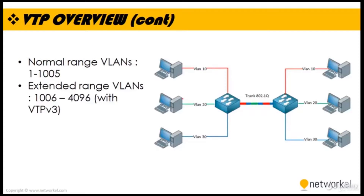In VTP protocol, we have a VTP server which distributes and synchronizes the VLAN information. You can propagate the normal range VLANs with VTP, but if you want to propagate the extended range VLANs, you should use VTP version 3. This extended range should be distributed using VTP version 3.